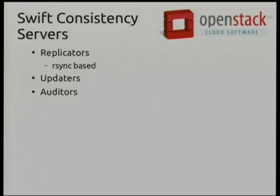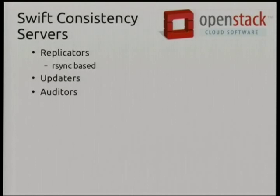The consistency servers — we're not going to talk about these as much, but they're still important. The rsync nature of the replicators is something people question. Replicators sit there and check the storage servers: this is supposed to have three copies and it doesn't, so I'll fix that. They use rsync to do that. It turns out rsync is actually really good at the task of shuffling data around and synchronizing it between servers, so they didn't write their own algorithm in Python to do that by hand.